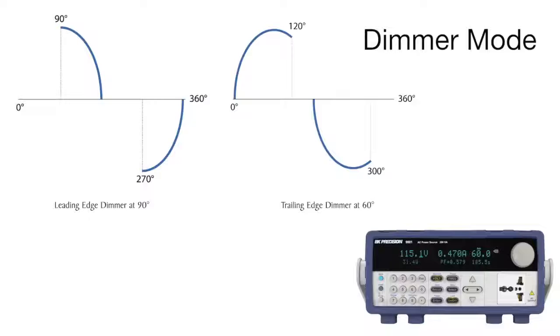Dimmer simulation varies the RMS voltage using phase cutoff for evaluating motors and lighting controllers.